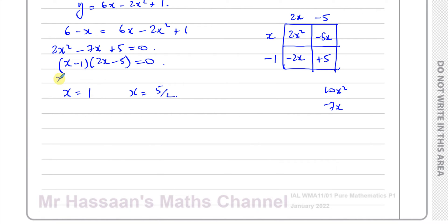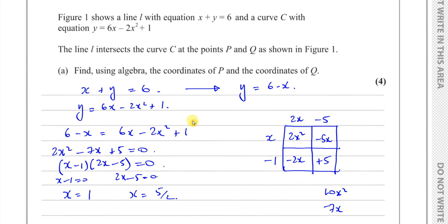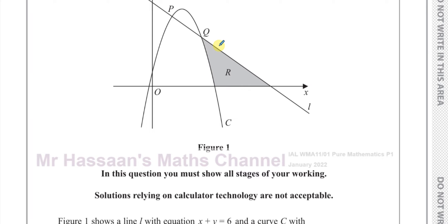So here you've got x - 1 = 0 and 2x - 5 = 0, so x = 1 and x = 5/2. Those are the x-coordinates where they intersect. This is 5/2 which is 2.5, and this is x = 1.